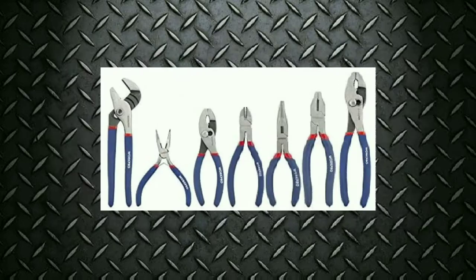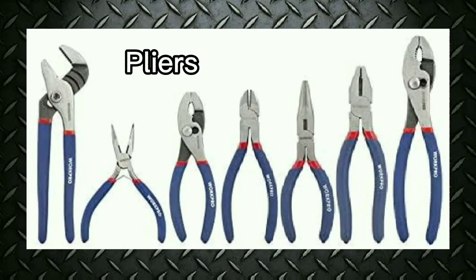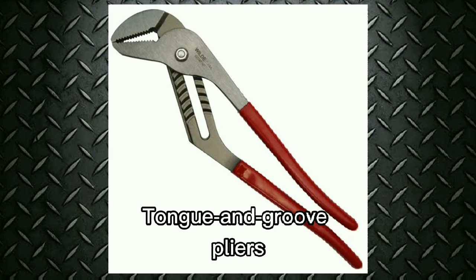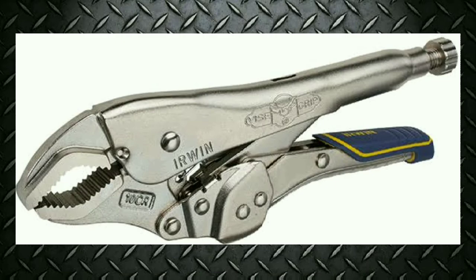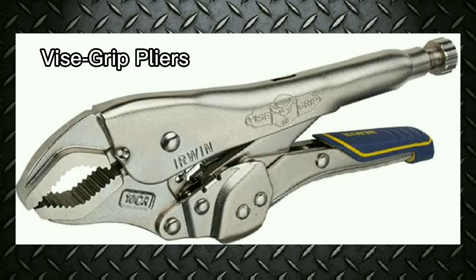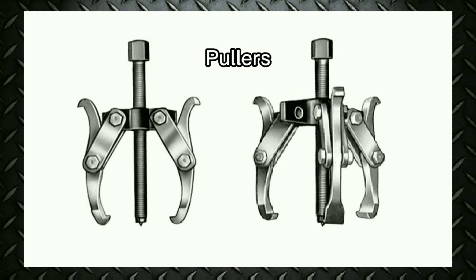Gripping tools — examples: pliers and pullers. Pliers are hand tools with a pair of adjustable pivoted jaws for cutting or gripping, available in many types and sizes. Combination slip joint pliers may have cutting edges at the back of the jaws. Tongue and groove pliers such as channel-lock pliers have tongues or lands on one jaw. Locking pliers such as vice grip pliers have locking jaws, making them useful as pliers, wrenches, clamps, and small vises. Pullers remove parts assembled with an interference fit, including gears and hubs from shafts and bushings from blind holes.